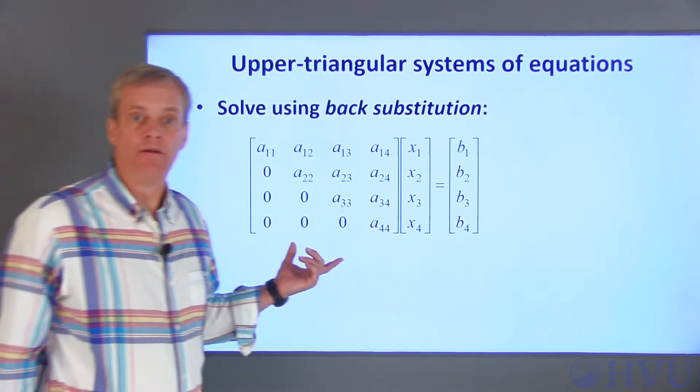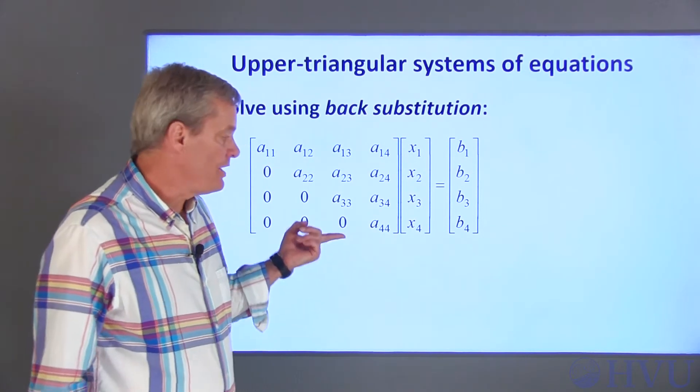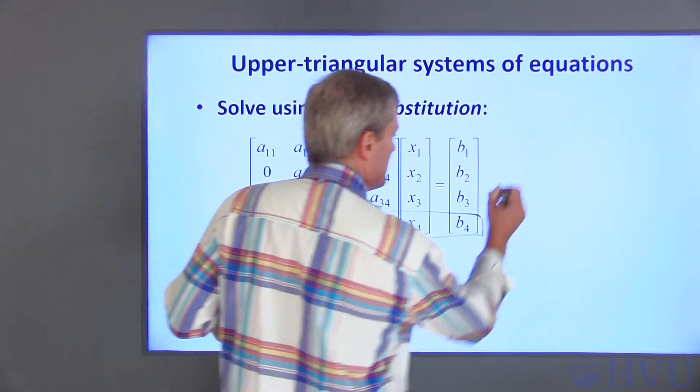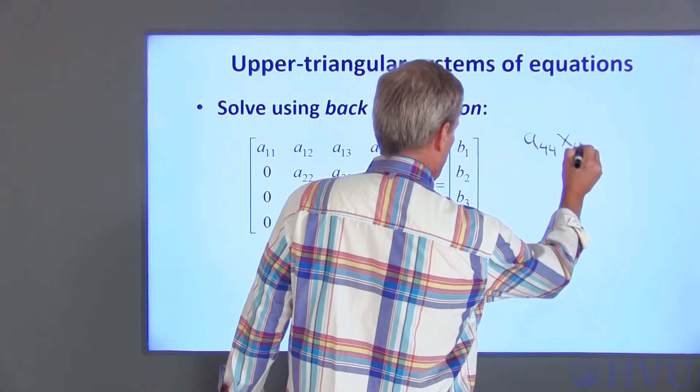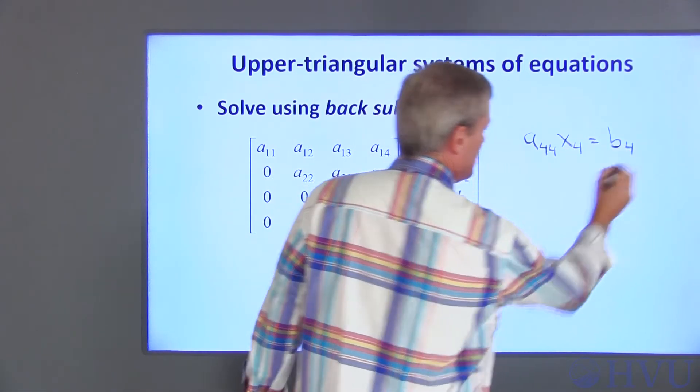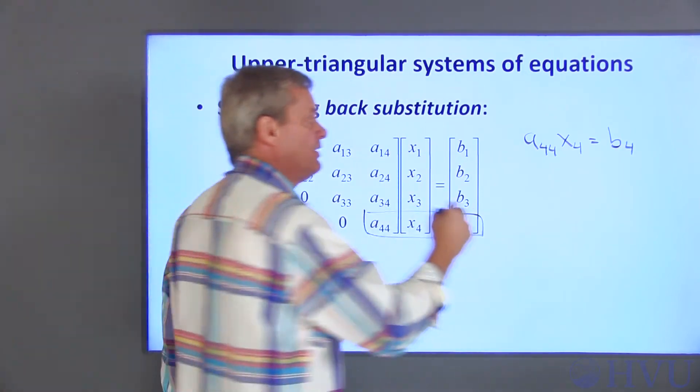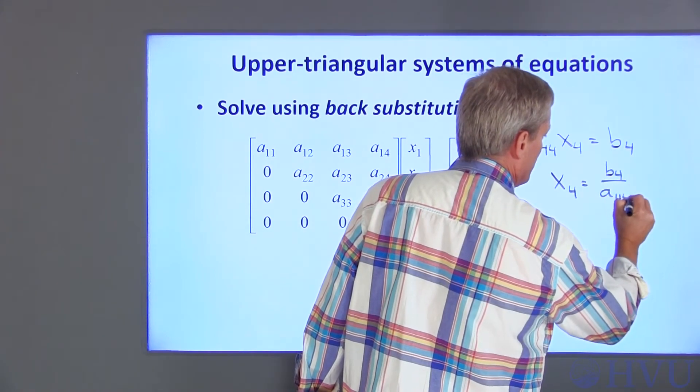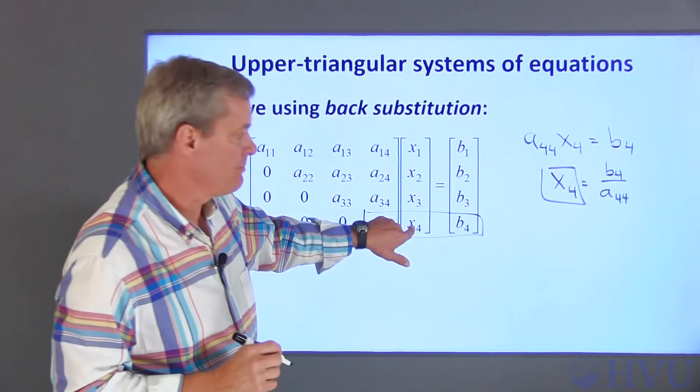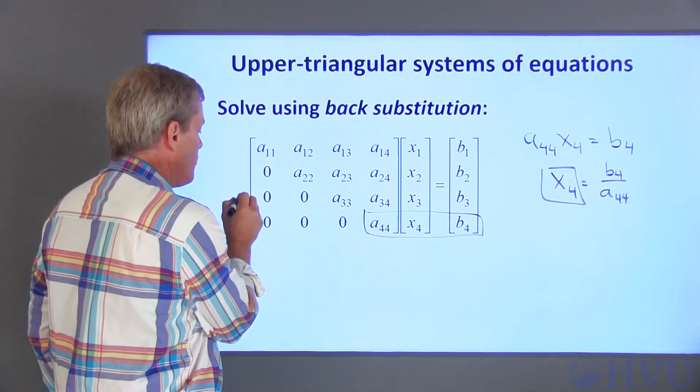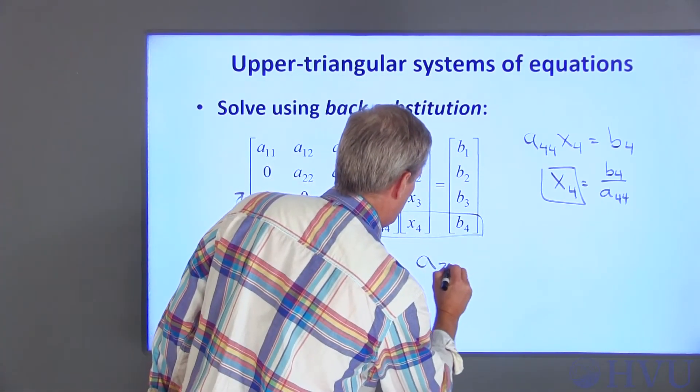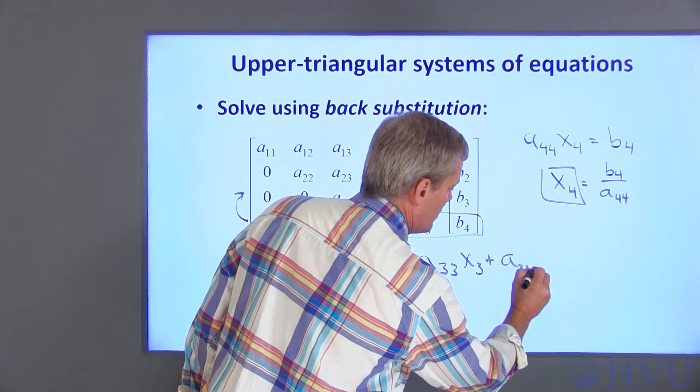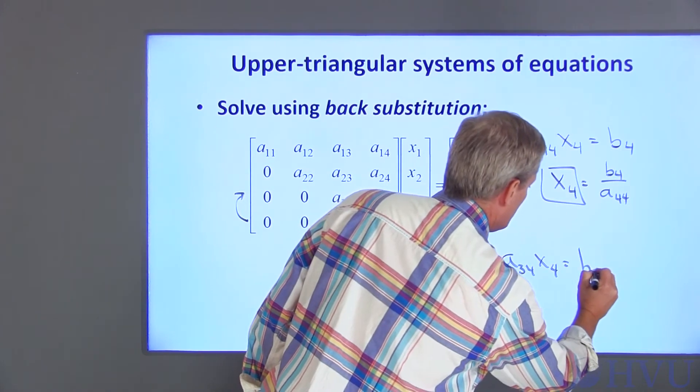To do back substitution, we just solve the equations sequentially starting with the last row. This row says A44 times X4 is equal to B4. I can solve that directly for X4. X4 is equal to B4 over A44. Now we have a number for X4 that we can plug in here. So we work up to the next equation, which is A33 times X3 plus A34 times X4 is equal to B3.